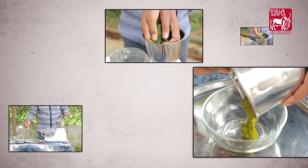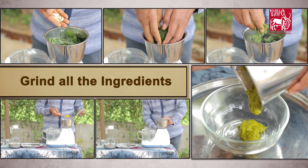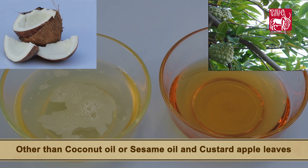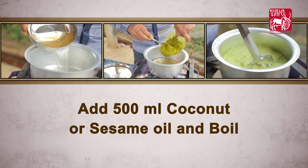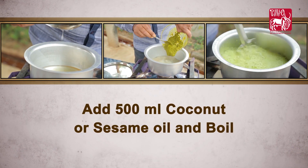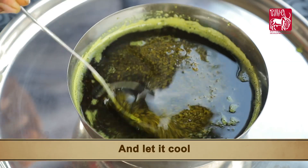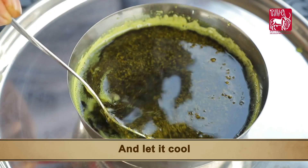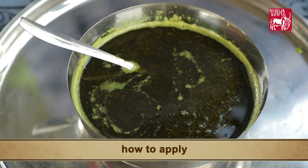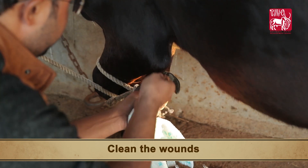Method: Grind all the ingredients other than coconut oil or sesame oil and custard apple leaves, and make it into a paste. Add 500 ml coconut or sesame oil, boil, and let it cool.